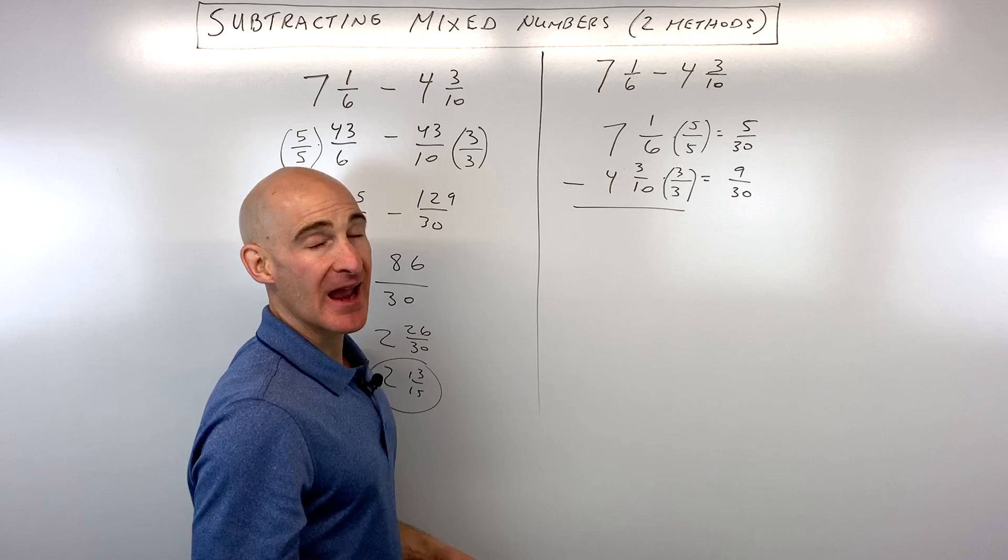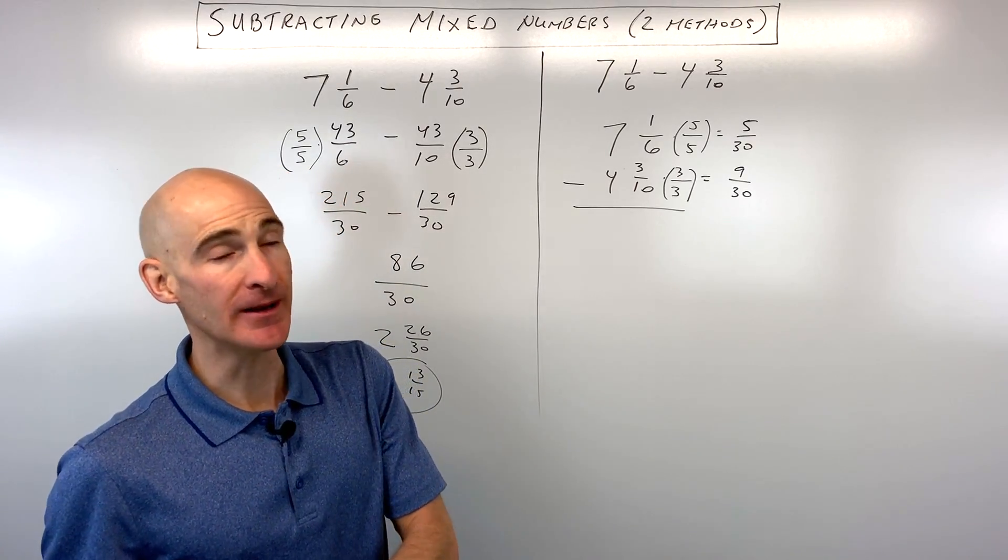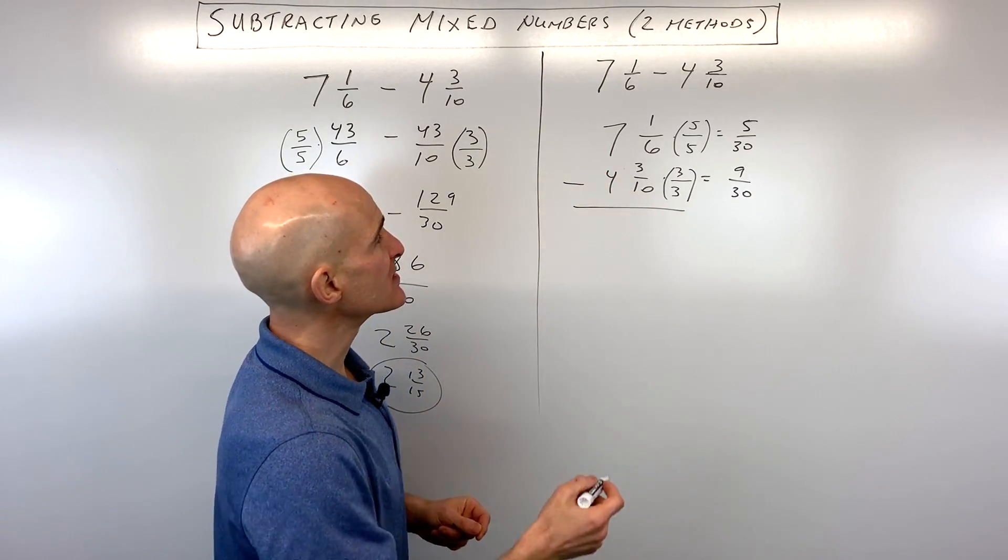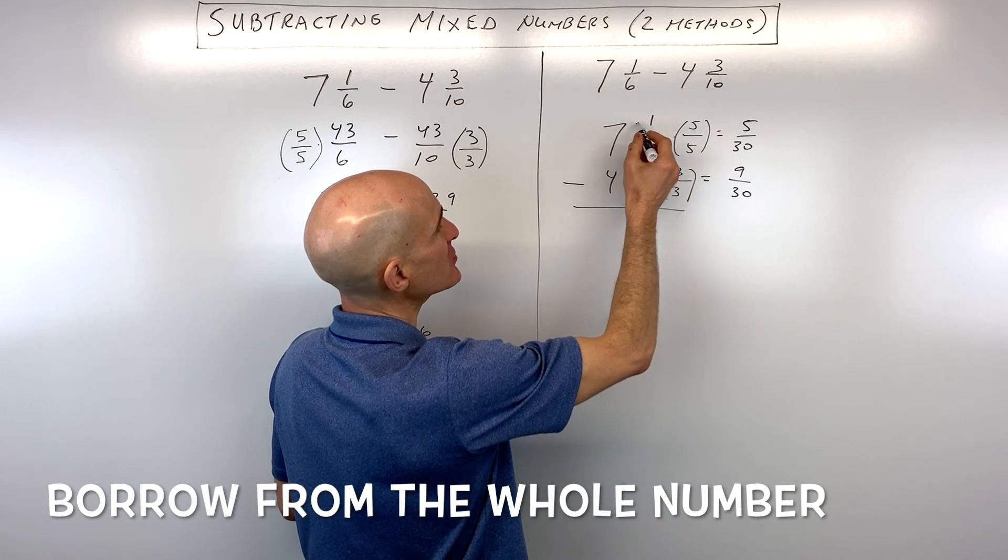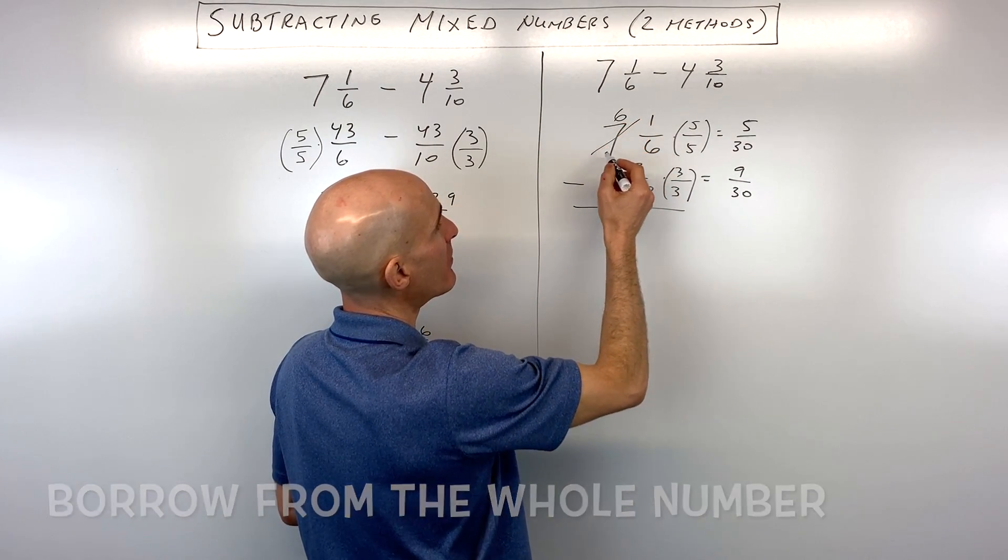But if we take 5 minus 9, that's going to give us a negative number, right? So the way we work with this is we say, well, let's go ahead and borrow from this 7. So we're going to change a 7 to a 6. We're going to borrow 1.